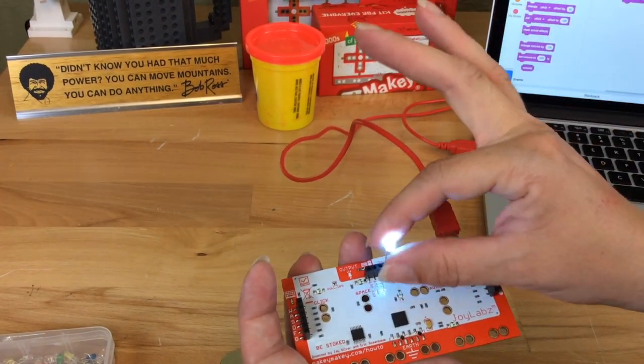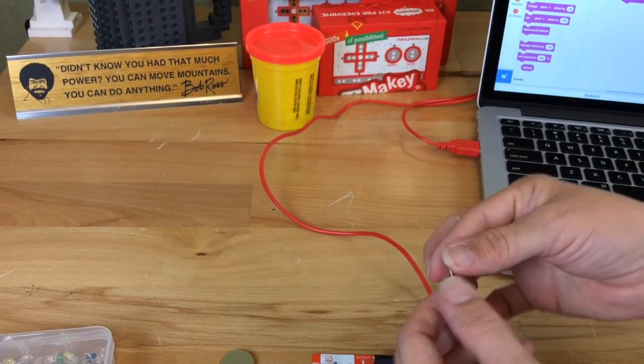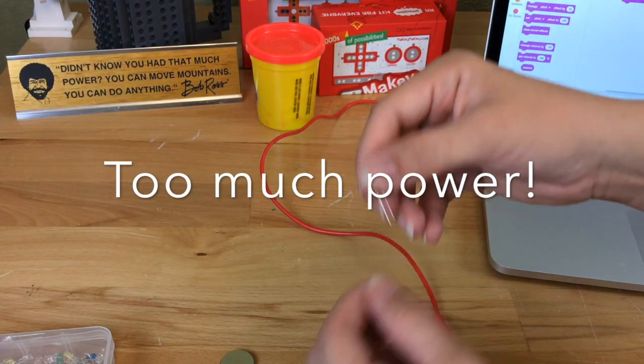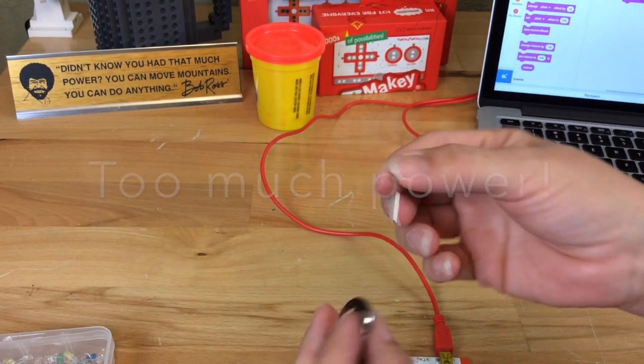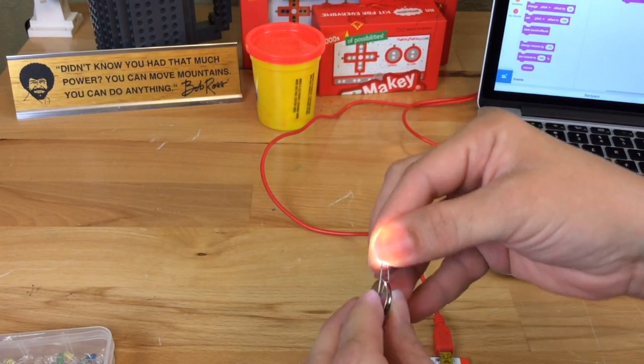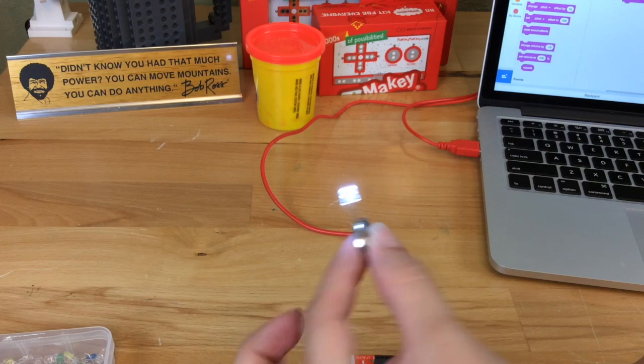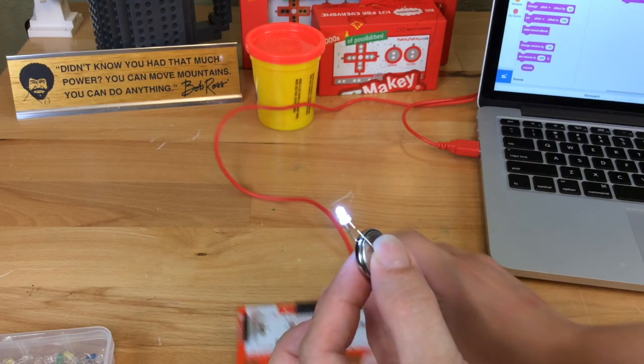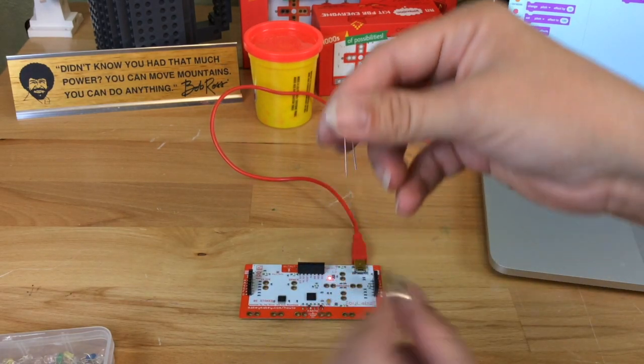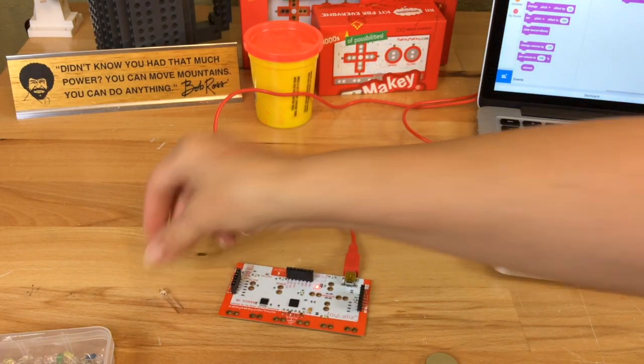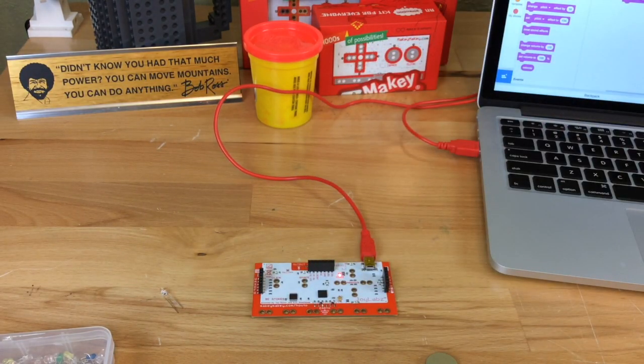However, I would suggest not doing this very long because it's really too much power for this LED. Normally you can just power an LED with a 3-volt battery, so there's really no need to do that if we're going to use Makey Makey. Instead, let's make a simple switch that lights up this LED.